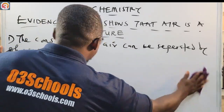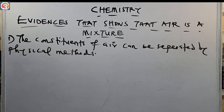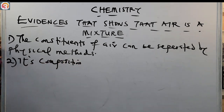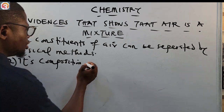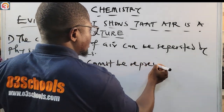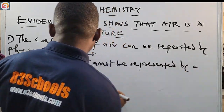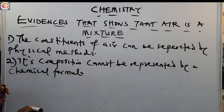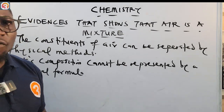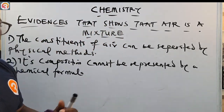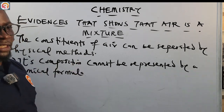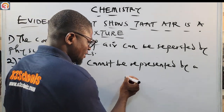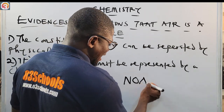Another evidence that shows air is a mixture is that its composition cannot be represented by a chemical formula, unlike a compound. We can state the formula of a compound, but for air, its composition cannot be represented by a chemical formula.